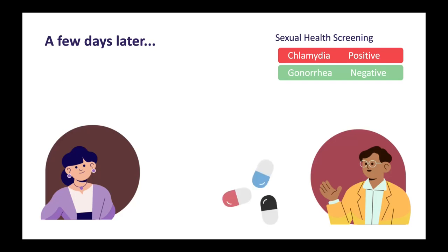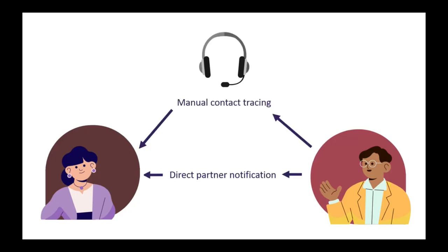He gets the pills, gets it treated, and typically what will happen is he'll be encouraged either to directly contact any partners he's had to tell them, or he'll be offered to talk to the clinic and they can call or text any of the partners. But this relies a lot on trust, on him being transparent about it, having the correct contact details, which isn't the case all the time, and especially with all the stigma around it.